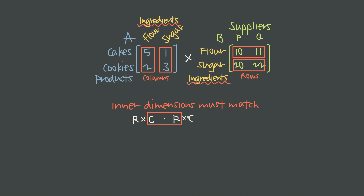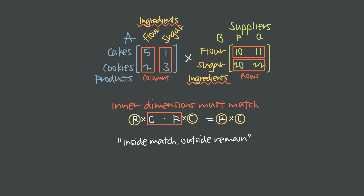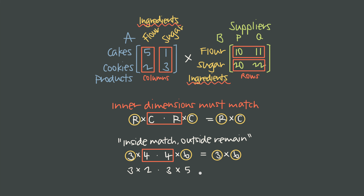The outer dimensions are going to become the dimensions of the answer. So the rule to remember is: inside match, outside remain. For example, can we multiply a 3-by-4 by a 4-by-6? The inside dimensions match — both are 4 — so we can multiply, and the result will be a 3-by-6 matrix. On the other hand, we could never multiply a 3-by-2 by a 3-by-5, because the inner dimensions are 2 and 3 — they don't match — so those two matrices are impossible to multiply.